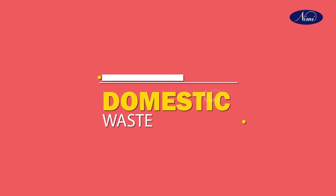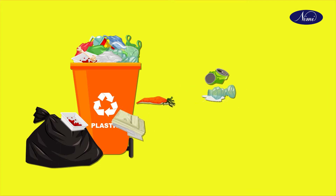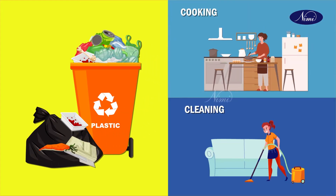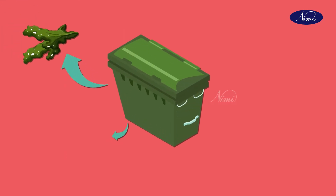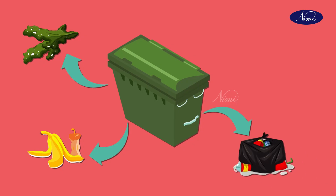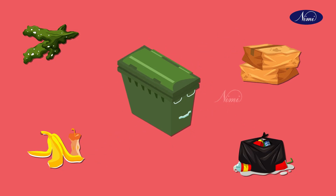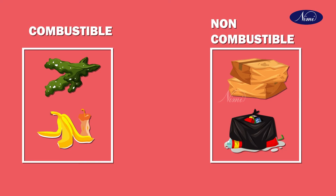Domestic waste includes the different household wastes collected during household activities like cooking and cleaning. It includes all rubbish, leaves, vegetable peels, garbage, dust, sewage waste, etc. It contains both combustible and non-combustible materials. When this waste is disposed of openly, it causes various harmful effects.